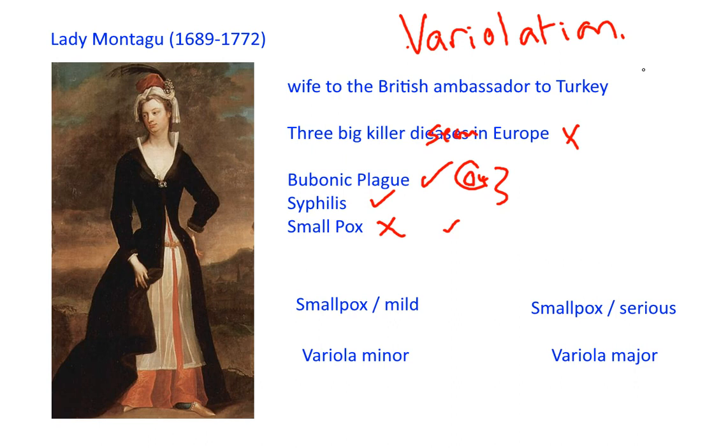Lady Montague was married to the then British ambassador who was stationed in Turkey, in the ancient city of Constantinople, which today is known as Istanbul.